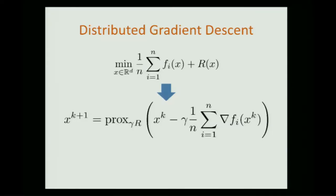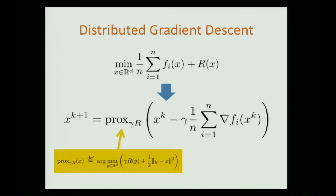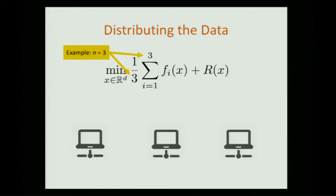The baseline method is distributed gradient descent, specifically distributed proximal gradient descent — just a way of writing proximal gradient descent where the gradient is the average of local gradients. In the case of three machines, you start by sending the problem to each machine: the first function goes to machine one, the second to machine two, and so on. Every machine maintains a local copy of the model x_k.